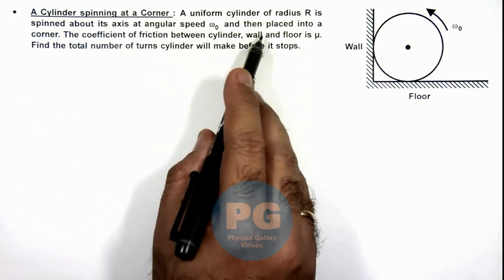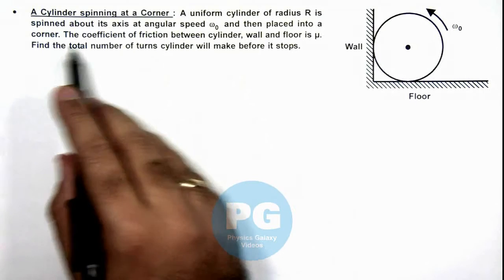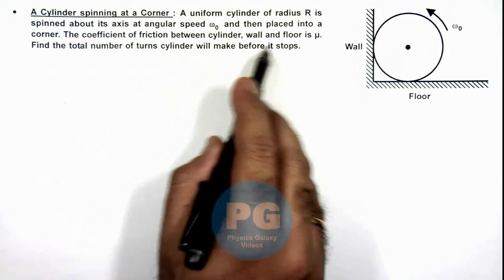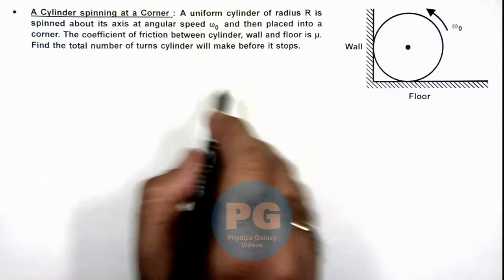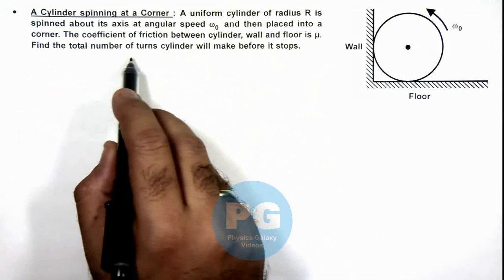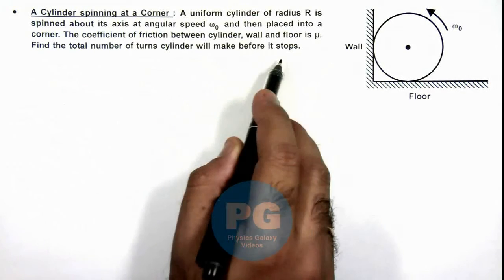And then placed into a corner. The coefficient of friction between cylinder, wall and floor is given as mu. We are required to find the total number of turns the cylinder will make before it stops.